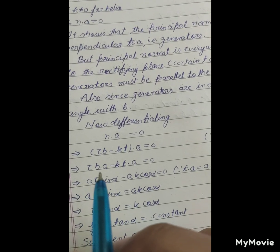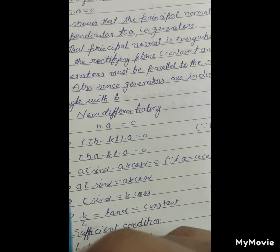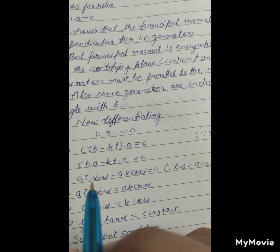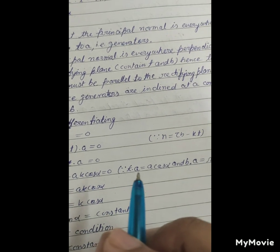Which implies τb dot A - kt dot A equals 0, which implies τA sin alpha - kA cos alpha equals 0.